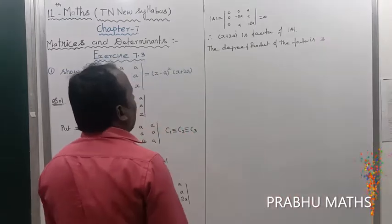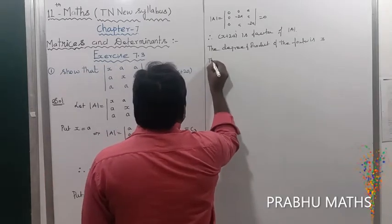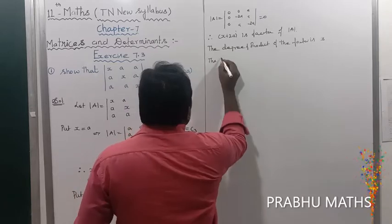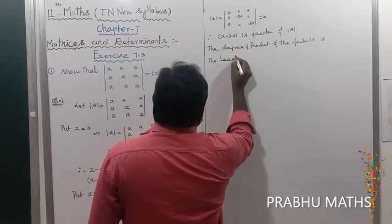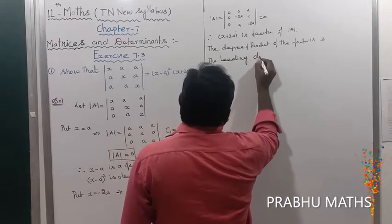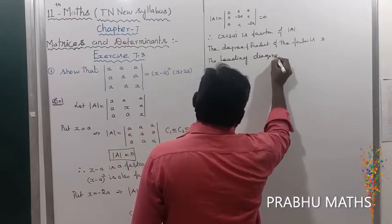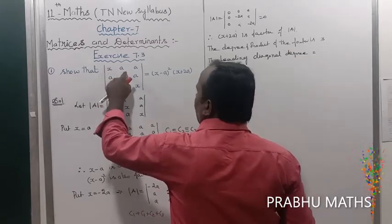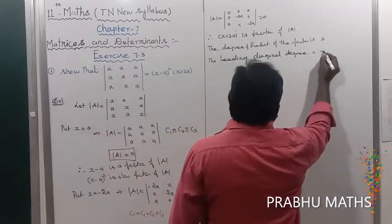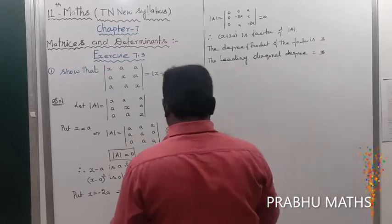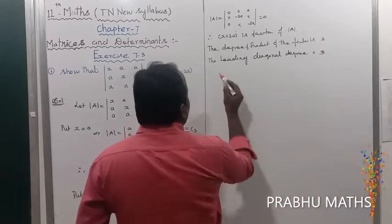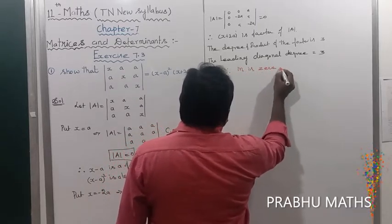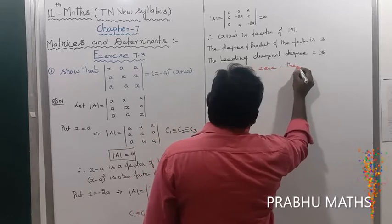The leading diagonal degree: x times x times x gives degree 3. Since the degree of the product of factors equals the degree of the leading diagonal, the difference is 0. Therefore m equals 0.